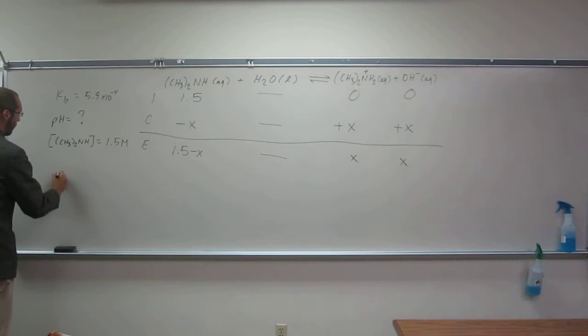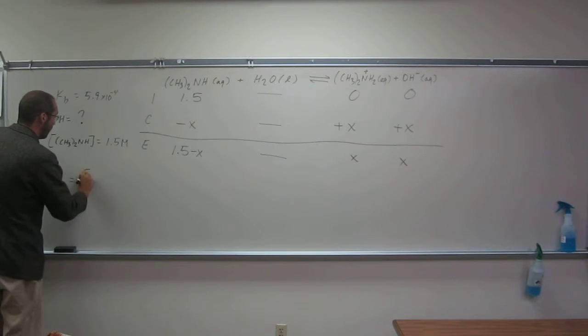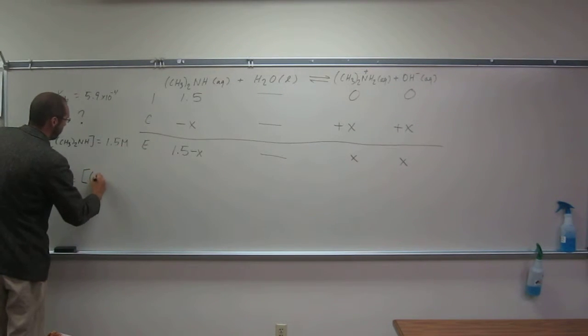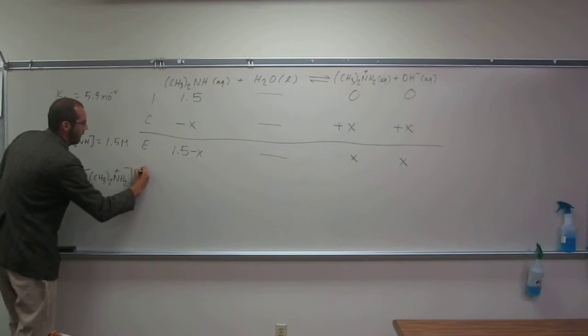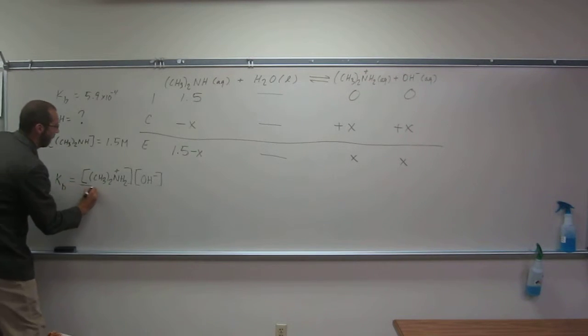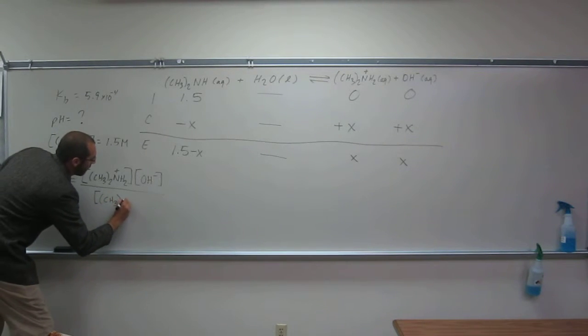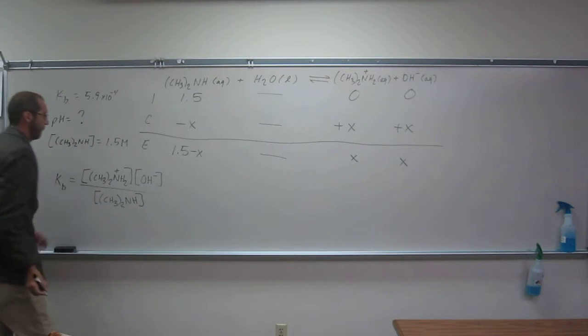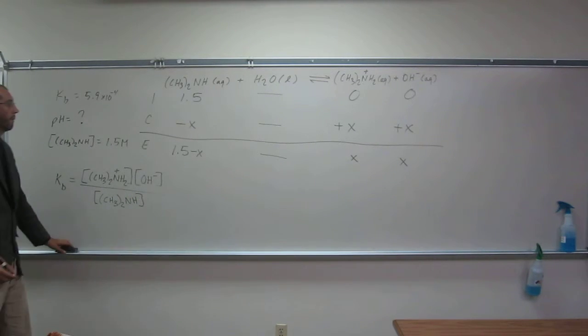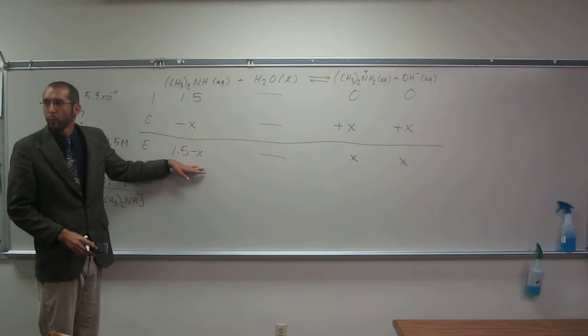And then of course, Kb's equation is going to be the concentration of protonated dimethylamine times OH minus divided by the concentration of dimethylamine in equilibrium. So what did we say? Well, because we're invoking the 5% rule, 1.5 minus x equals 1.5, okay?